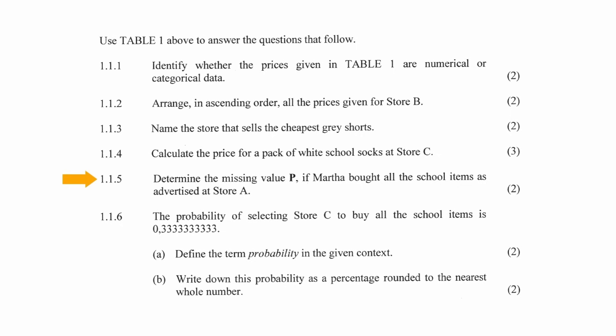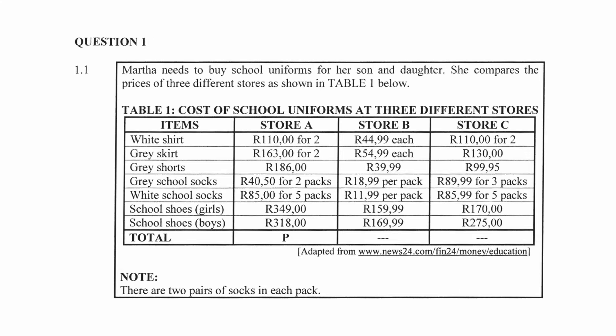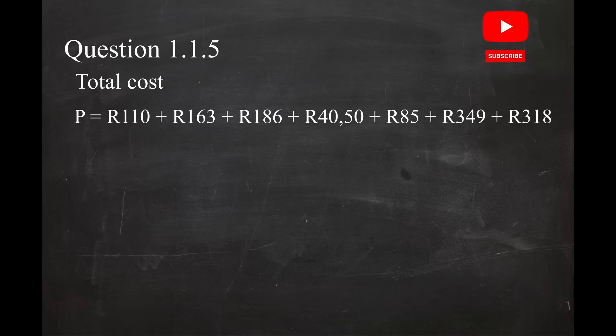In question 1.1.5, you have to determine the missing value P if Martha bought all the school items as advertised at Store A. The cost of all the school items at Store A are listed in the second column in the table. The total cost P equals the sum of all the prices in column 2. This will equal a total cost of $1,251.50.